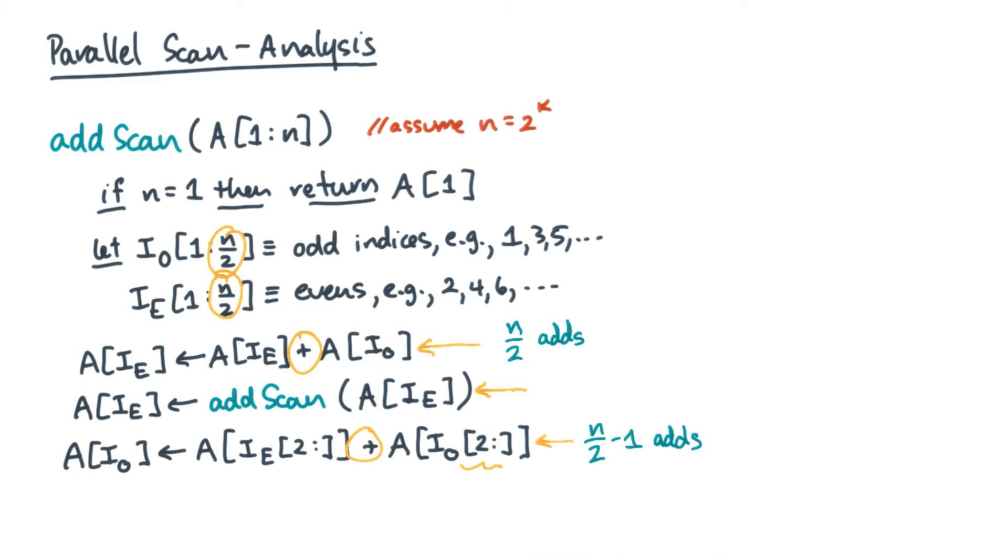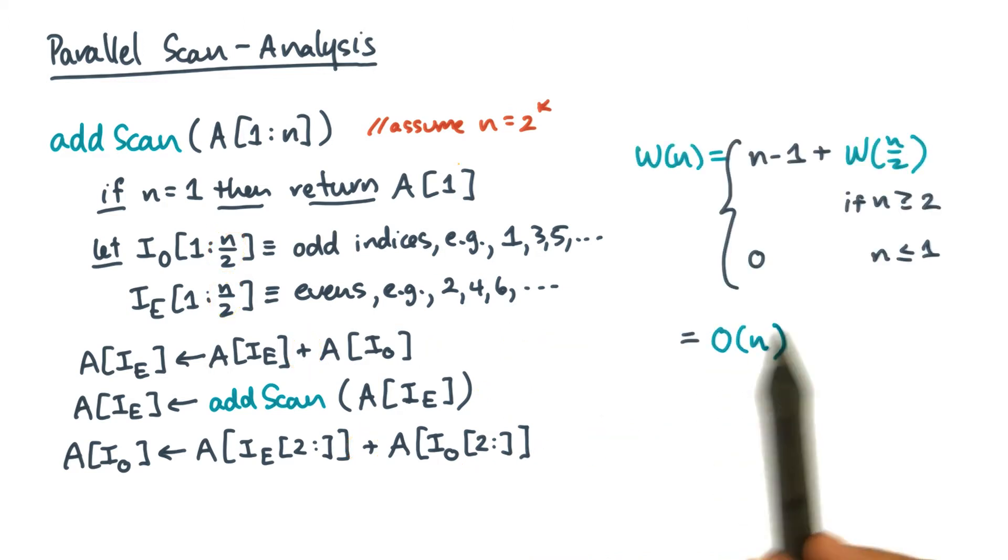So what does that mean? Basically, the recurrence for the total work is this. So the work is linear in n.